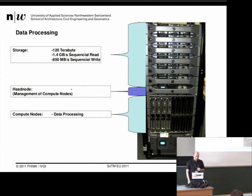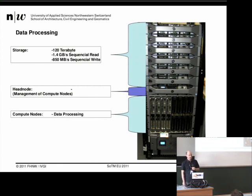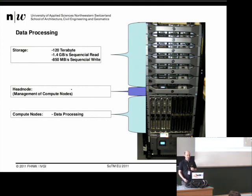We are really fast. Our current results are at 400 tiles per second in data processing. For example, we created a dataset from all of Switzerland at 25 centimeters per pixel — around 30 million tiles — and we used around 45 hours for this. So it's quite a good result for such an affordable system.